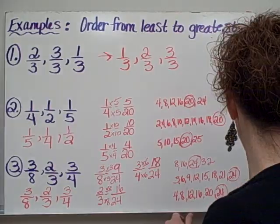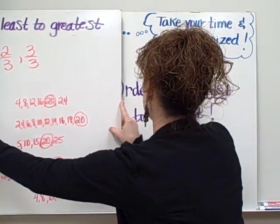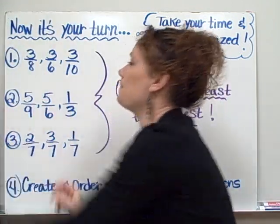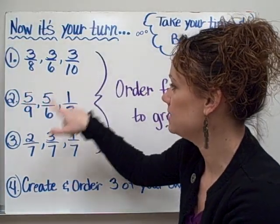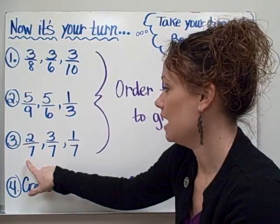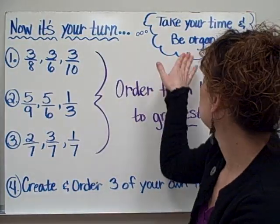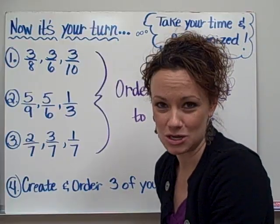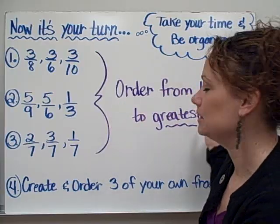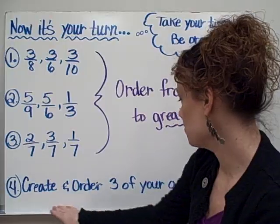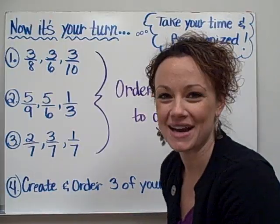So, it is time for you to practice some problems on your own. Please do these in box number 3 of your homework sheet. We have 3/8, 3/6, and 3/10; 5/9, 5/6, and 1/3; and 2/7, 3/7, and 1/7. Please make sure that you are taking your time and staying organized so that you can see the relationship between your fractions. And the directions ask you to order from least to greatest. And for box number 4, I would like you to create three of your own fractions and order them from least to greatest as well.